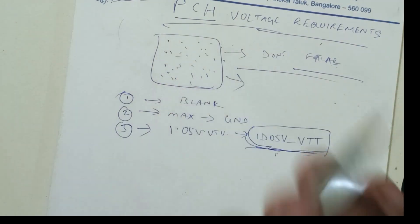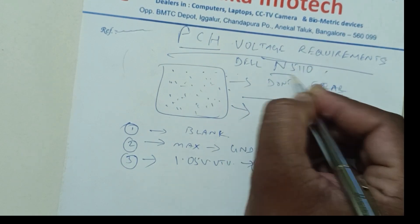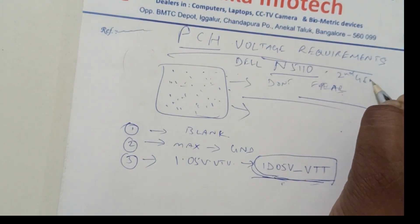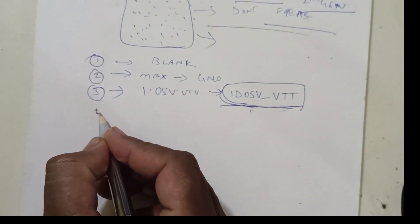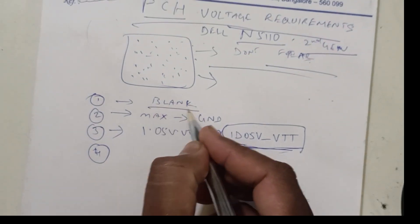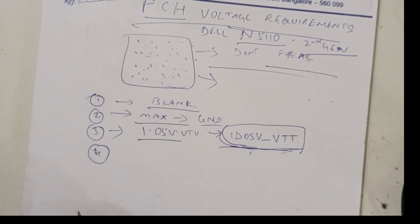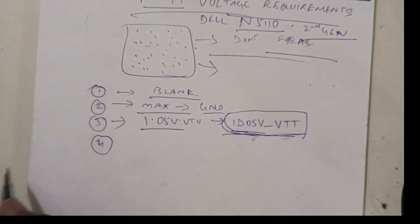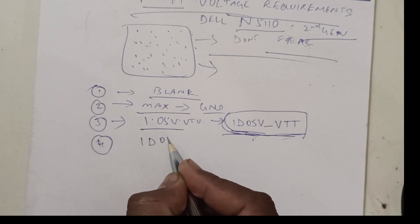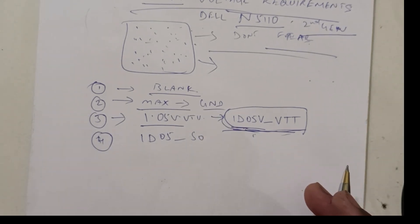First, general look up of PCEH in Dell N5110. This is a second gen motherboard. Maximum blank will be there and maximum ground will be there. Other than that, maximum voltage is 1D05 volts VTT. After that, same 1D05 S0, that also maximum number.